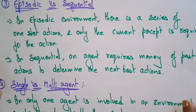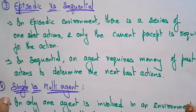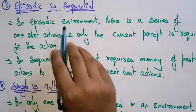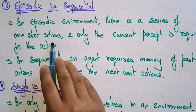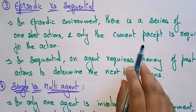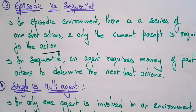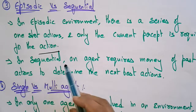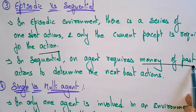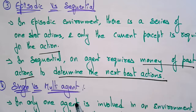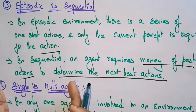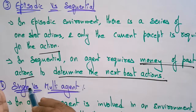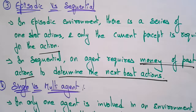Another feature is episodic versus sequential. In an episodic environment, there is a series of one-shot actions and only the current percept is required for that action. In a sequential environment, an agent requires memory of past actions to determine the next best action — whenever the past action is fully completed, then only it goes to the next best action.